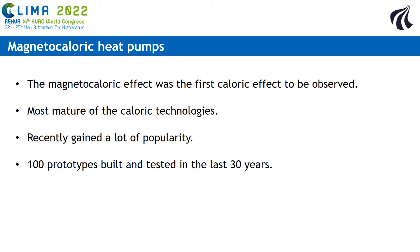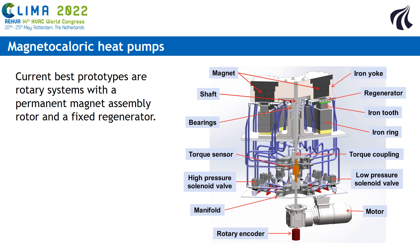The magnetocaloric effect was the first caloric effect to be observed, and that's why it's the most mature of the caloric technologies. It has recently gained a lot of popularity within the scientific community. In 30 years, there had been around 100 prototypes built and tested. The design of the current best prototypes for magnetocaloric heat pumps are rotary systems with fixed regenerators and a rotating magnet assembly. You can see on the right a schematic of a typical magnetocaloric heat pump with the rotating magnet assembly on top, the regenerators below, and under the pipe and valve system.